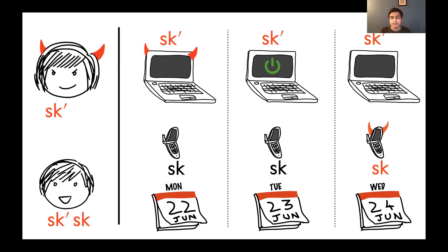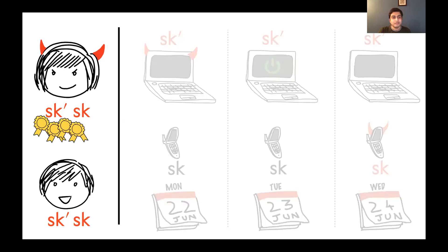But unfortunately, on Wednesday, the attacker is able to break into his phone and steals the other signing key fragment. And now that the attacker has both halves of the signing key, she can forge arbitrary messages, and this makes Bob sad again.